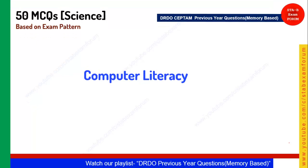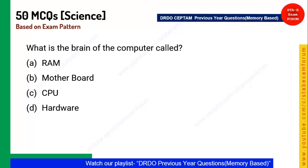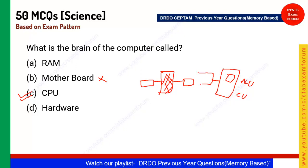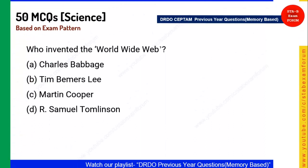Now, 10 questions on computer literacy. First question: What is the brain of the computer called? The answer is the CPU — Central Processing Unit. In the block diagram, the CPU is the central box connected to input and output devices. The CPU contains the Arithmetic Logic Unit and the Control Unit, interfaced with memory. Option C is the correct answer.